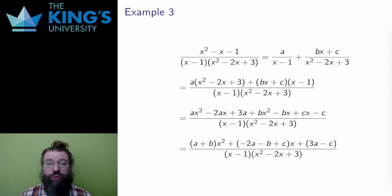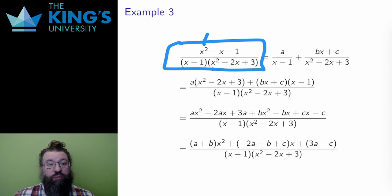The first example is this rational function. It is proper, degree 2 in the numerator and degree 3 in the denominator, and it is factored. The quadratic is irreducible, the discriminant is 4-12 equals negative 8, which is negative, so it has no roots and it can't be factored into two linear terms.